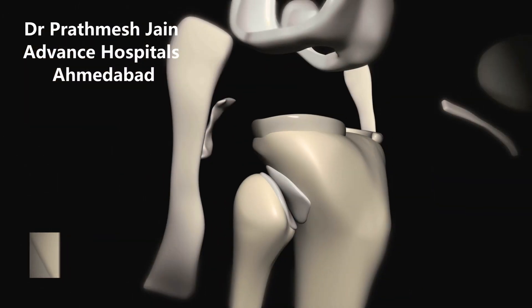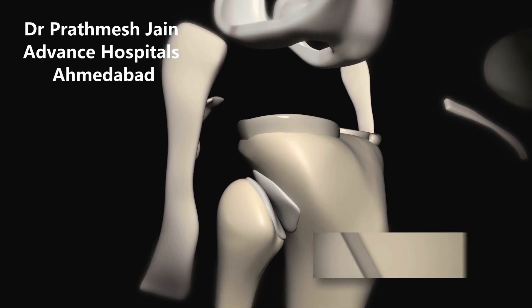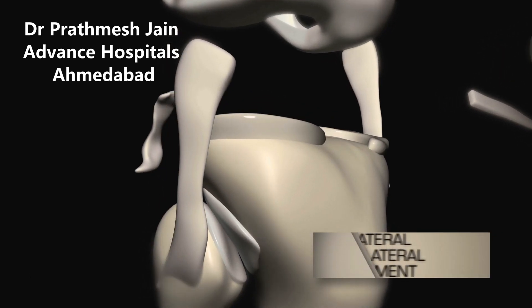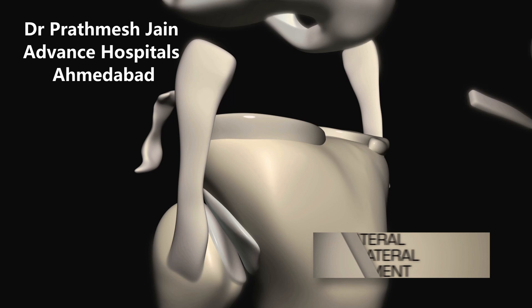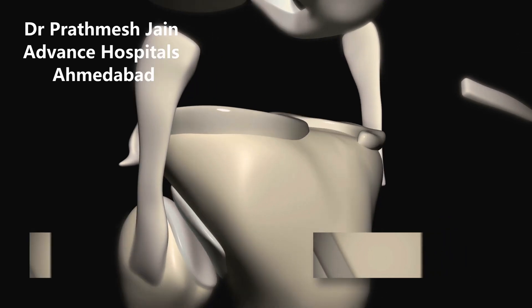A similar ligament is on the outside of the knee and this is called the lateral collateral ligament. This ligament connects the thigh bone to the fibula, that is the small bone of the leg. This is a weaker ligament and more of a circular ligament as compared to the broad medial collateral ligament.